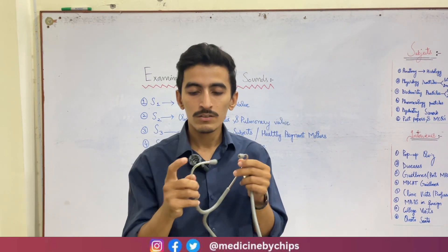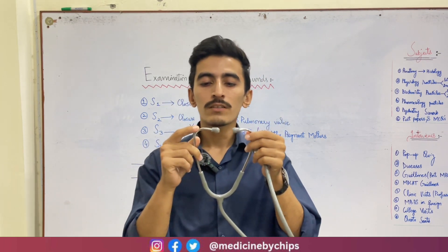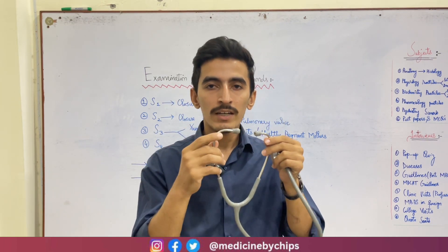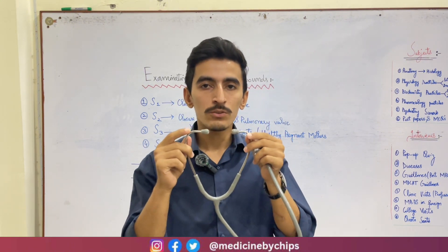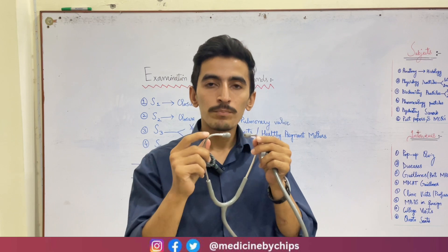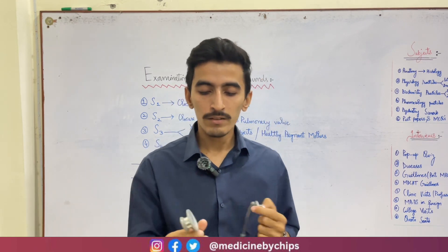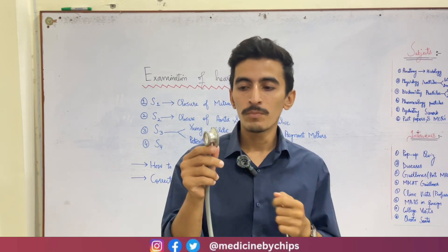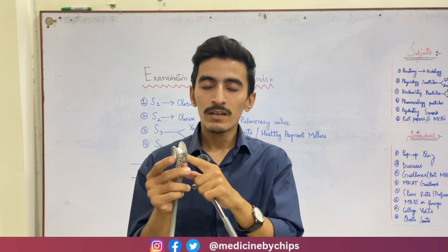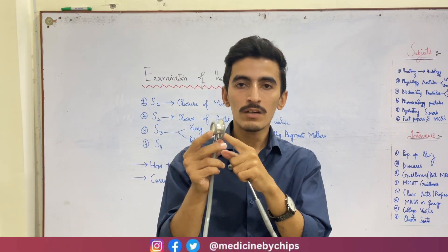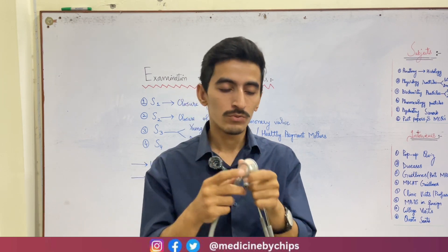Here is the stethoscope. This is its earpiece. We should always direct the earpiece forwards and not backwards, and put the earpiece into the ear canal while directing it forward. There are two parts of the stethoscope: one is called the diaphragm and the other is called the bell. The diaphragm is used for listening to high pitch sounds such as heart sounds, while the bell is used for lower pitch sounds.